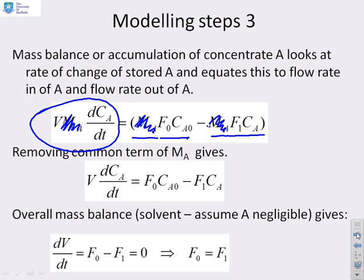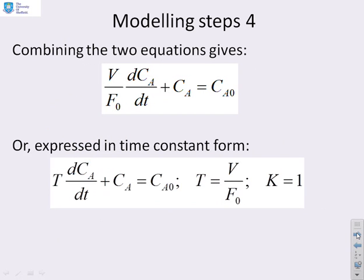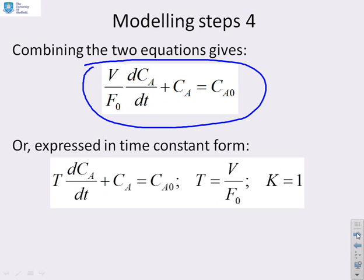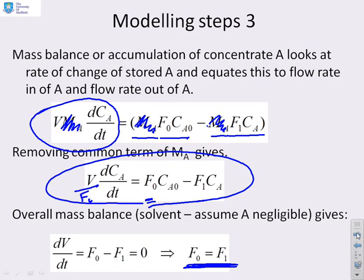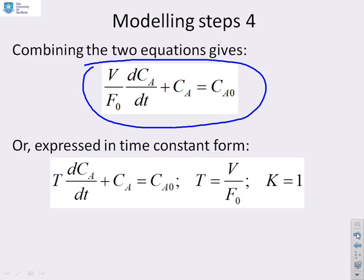We observed that the flow in equals the flow out, so we set F1 equal to F0. Dividing throughout by F0, we get: (V/F0)·(dCA/dt) + CA = CA0. And that is our model. We can now write this in time constant form: τ·(dCA/dt) + CA = CA0, where τ = V/F0 and K = 1.